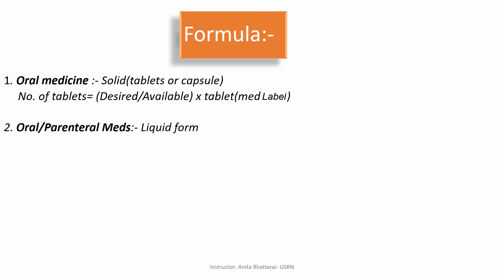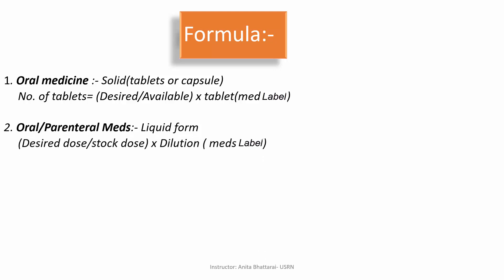Next is oral or parenteral medicine — that is medication in liquid form. The formula for this is: desired dose divided by stock dose, multiplied by the dilution. Dilution means the volume stated on the medicine label.